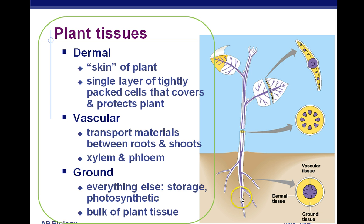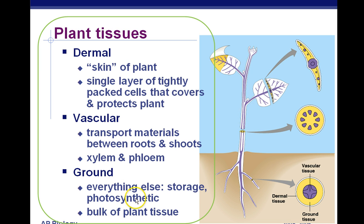Phloem transports sugars from the leaves down to the roots, though sometimes sugars are transported the other direction, and we'll talk about that later. Ground tissue is everything else. So if you get a test question about what type of tissue it is — if it's not the skin and it's not a tube, it's ground tissue. All the middle layers of the leaf that do photosynthesis, all the parts of the plant not involved with covering or transporting — that's ground tissue.